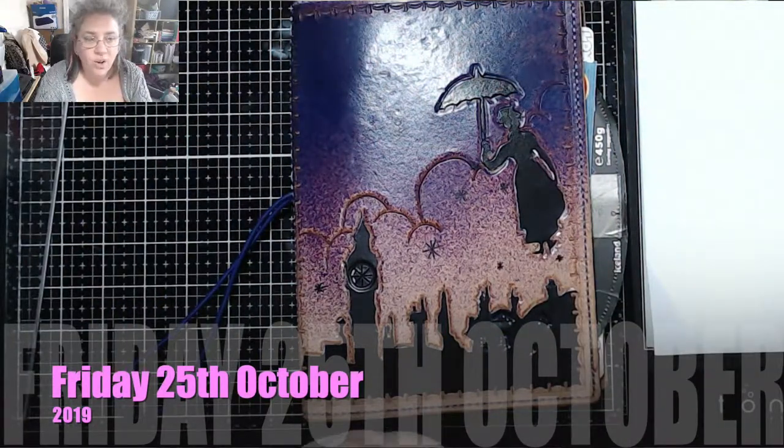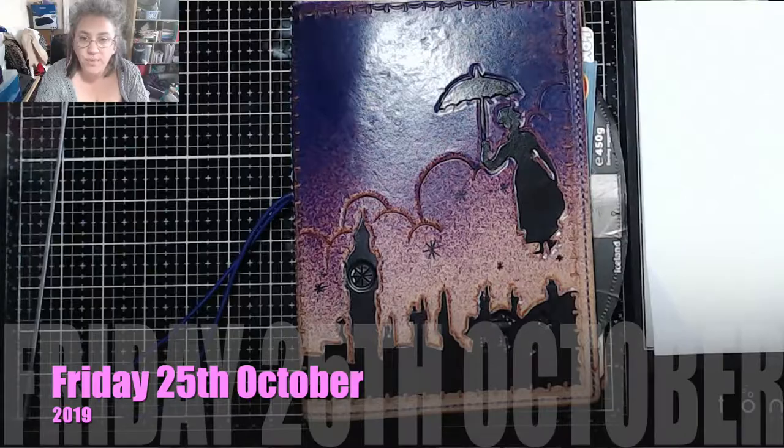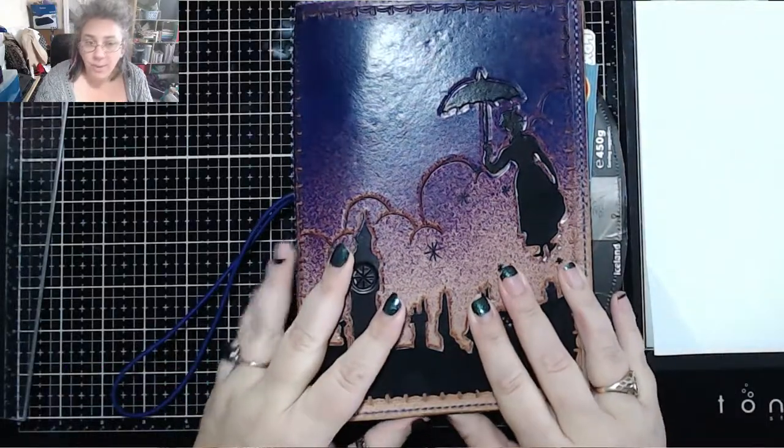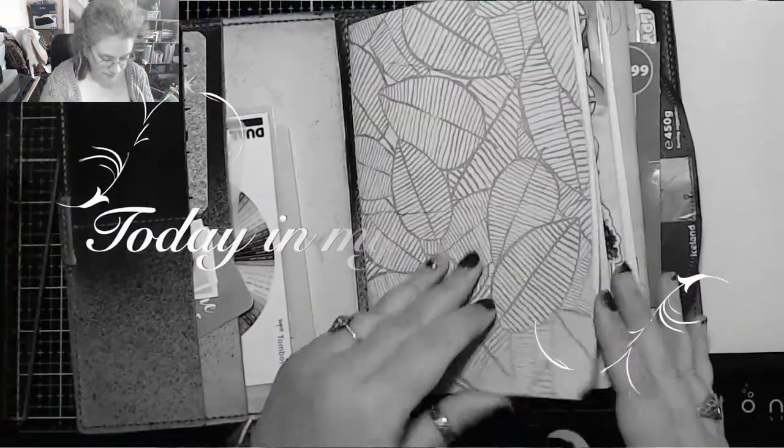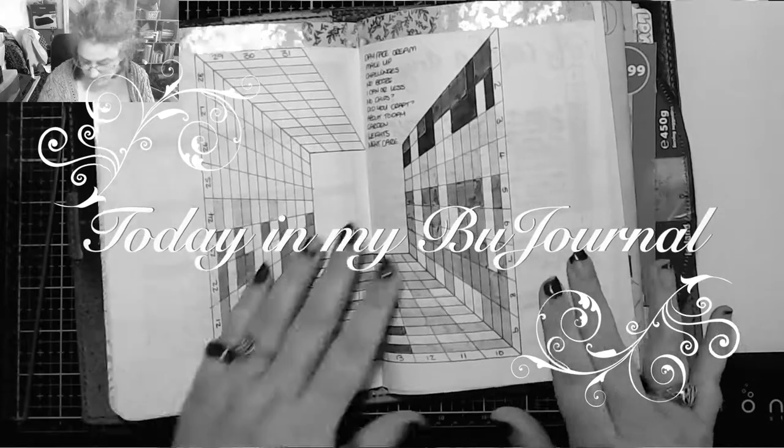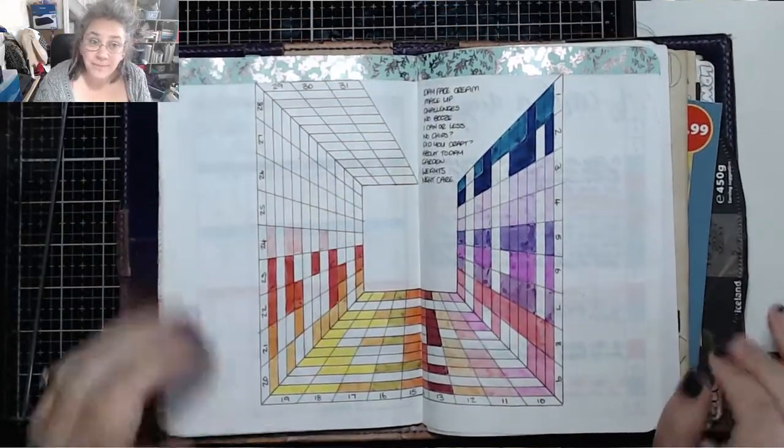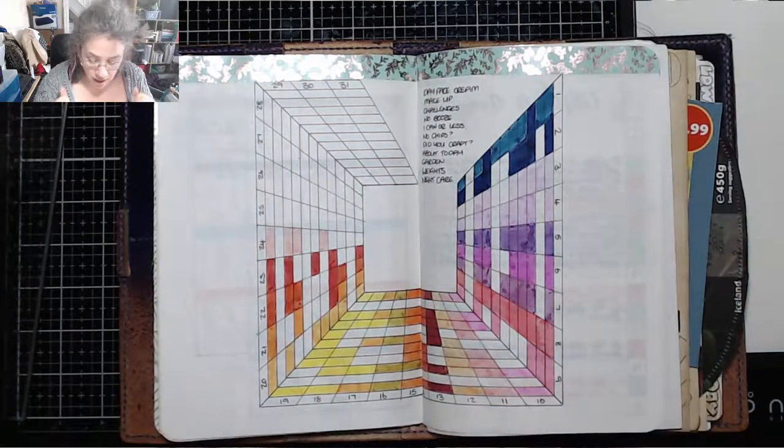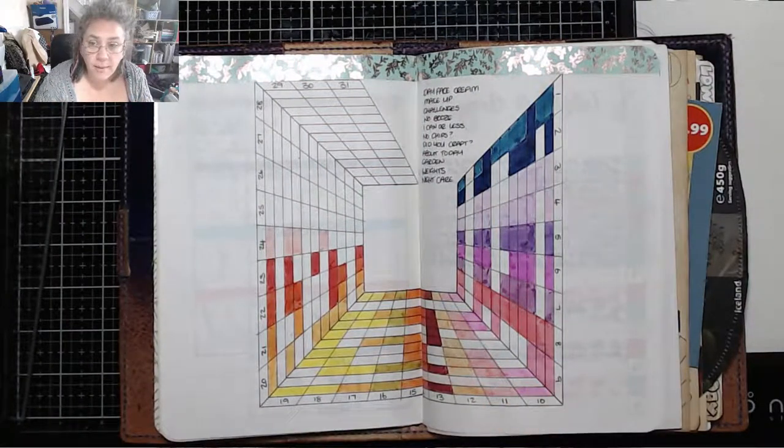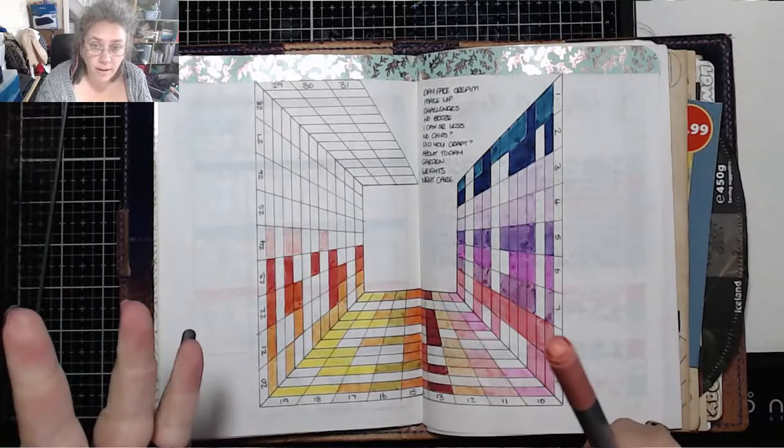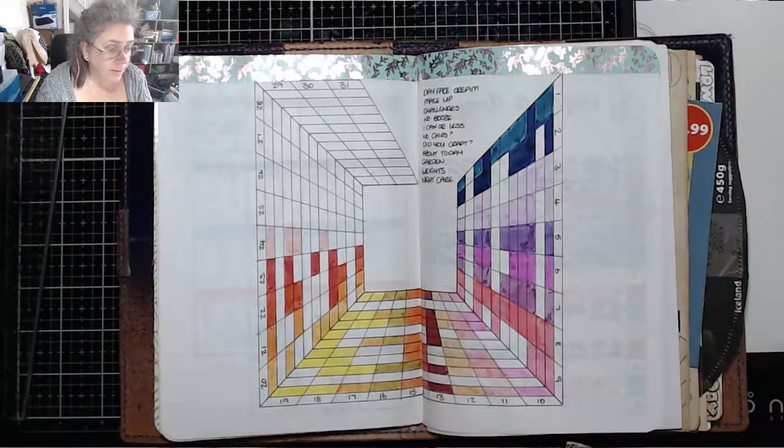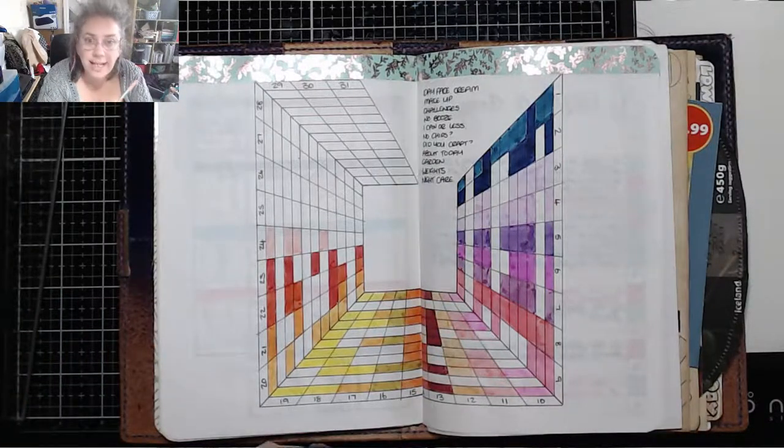Good morning, it's 10 past 10 on Friday the 25th of October and it's time for today in my bullet journal.